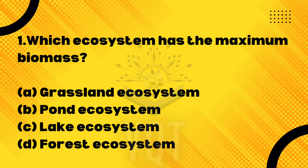Of all the options, the ecosystem that has the maximum biomass — this is a direct question and also a GK-type question. The answer is very simple. Option D, forest ecosystem, is the correct answer.